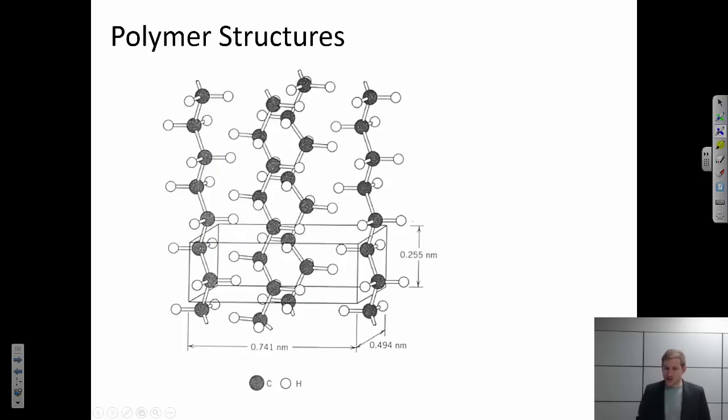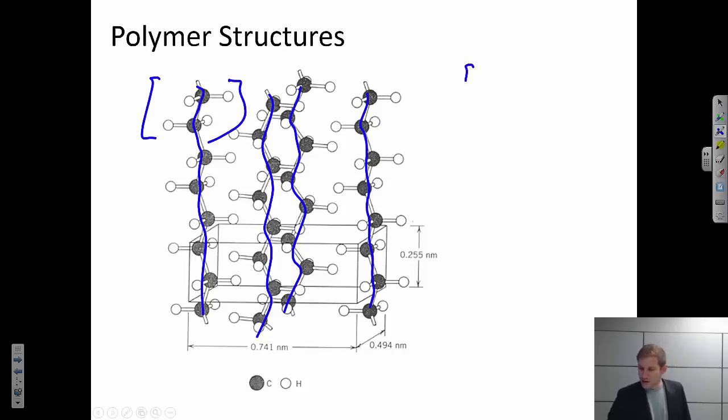And the answer to that question is that they want to line up. So I have chains of polymers that are lined up parallel to other chains. So this is an example of polyethylene. The repeat unit of polyethylene is given by two carbons. Each carbon has two hydrogens coming off it. So this is probably one of the most basic polymers that we can think about.